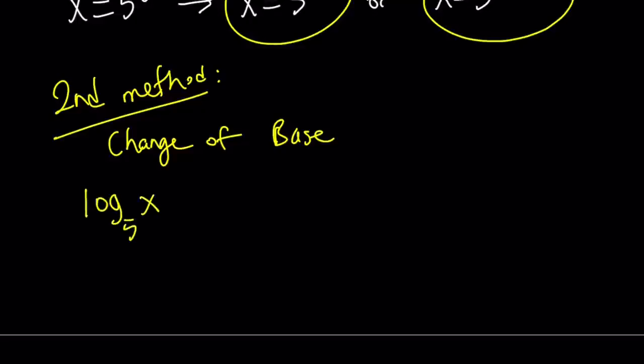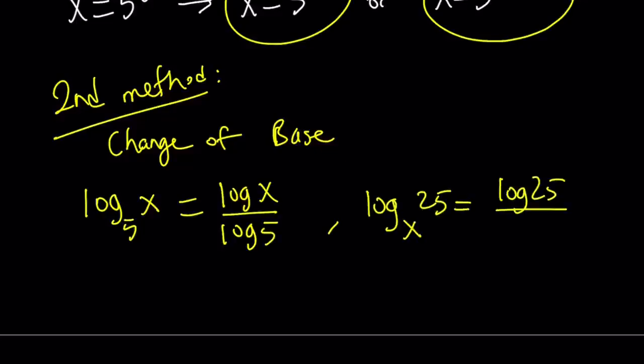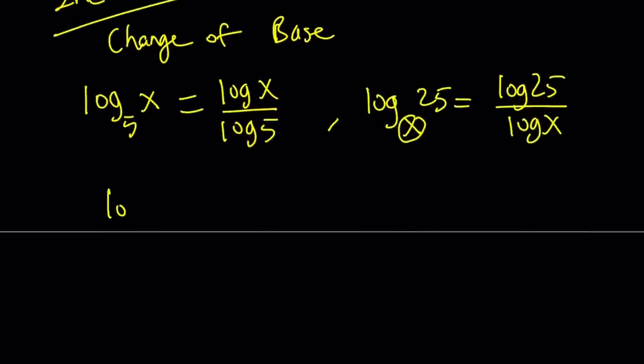Log x with base 5. I can write it as log x over log 5. And log 25 with base x. I can write it as log 25 over log x. So as long as you write this number at the bottom and the other at the top, you're good. That's how the formula works. So now we're going to do the following. Since these two expressions are equal, we're going to set them equal to each other. So we have log x over log 5 equals log 25 over log x.